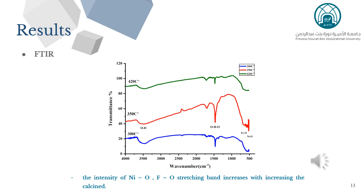In order to determine the chemical structure of the samples, the spectra was measured over the frequency range of 590 to 4,000 cm⁻¹. The broadness of the absorption band indicates that nickel oxide particles are non-crystalline and well crystallized. The intensity of the nickel-oxygen and iron-oxygen stretching bands increases as the calcination temperature increases.